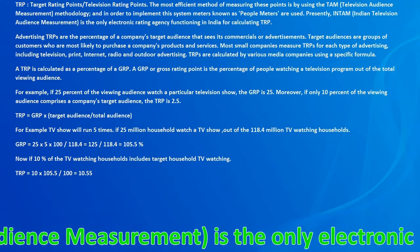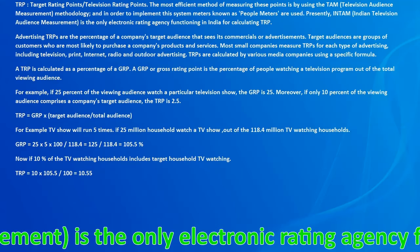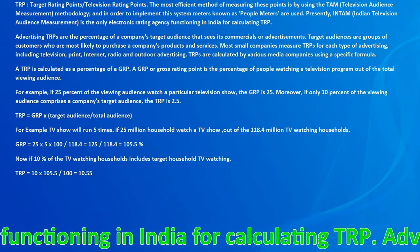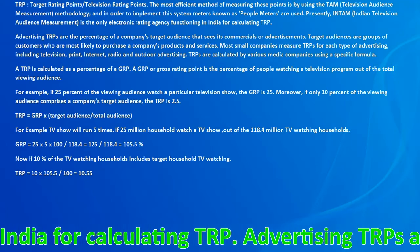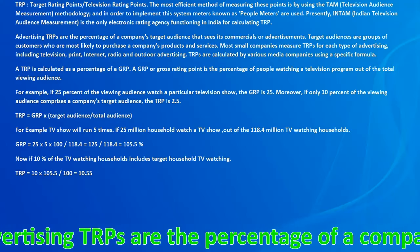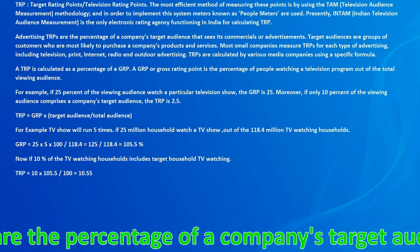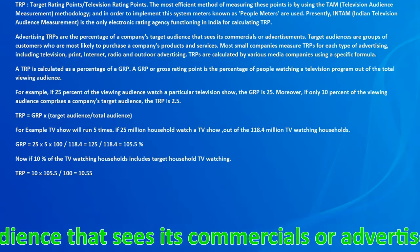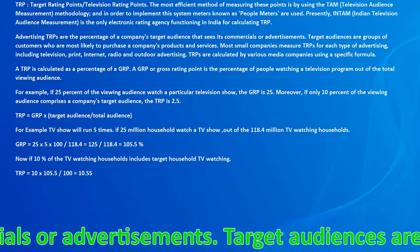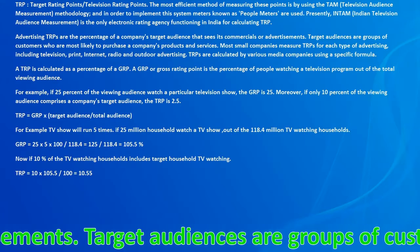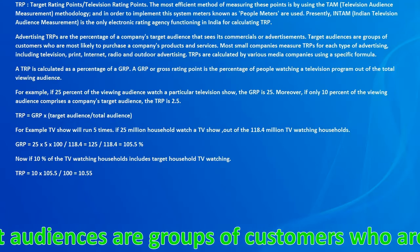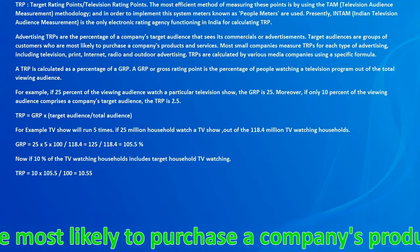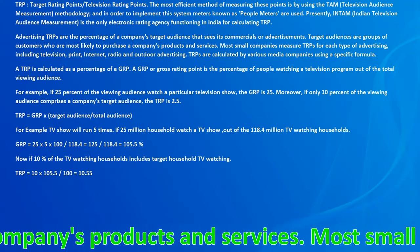Advertising TRPs are the percentage of a company's target audience that sees its commercials or advertisements. Target audiences are groups of customers who are most likely to purchase a company's products and services. Most small companies measure TRPs for each type of advertising, including television, print, internet, radio, and outdoor advertising.